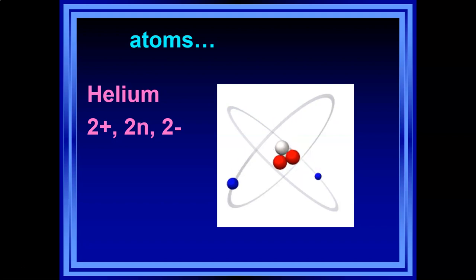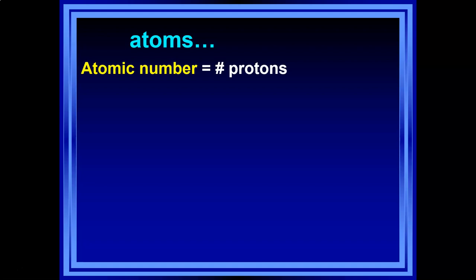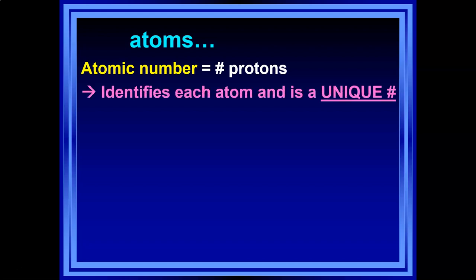Charges attract, and opposite charges will cancel each other. In the case of helium, you have two positive charges exactly equal to the two negative charges — they cancel each other out with nothing left over, giving an overall neutral charge. What makes helium helium is its unique number. This brings us to the important term atomic number, which represents the number of protons in the nucleus. No other element has two protons — only helium. The atomic number identifies the atom and is unique.